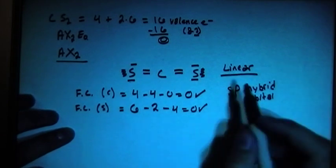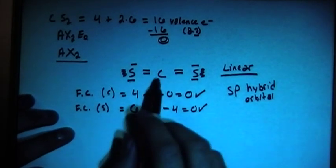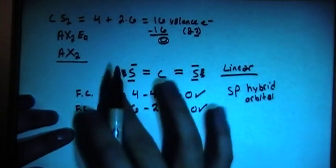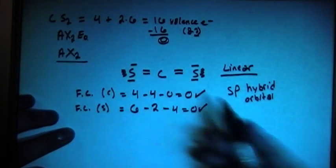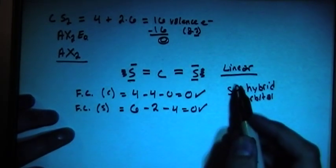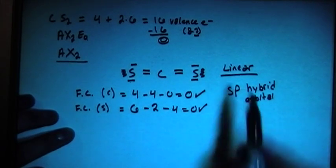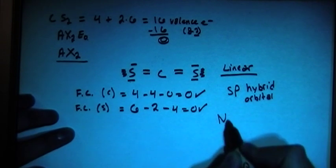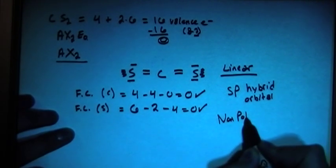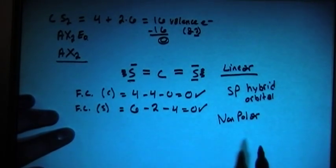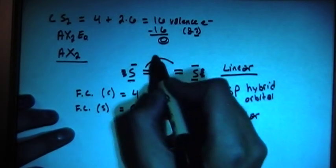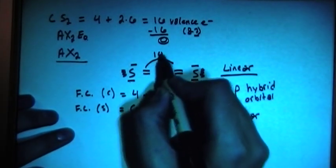And now we can check for the polarity, and in this case, it's linear, and both of the outside atoms that are attached to the center are the same. They're going to cancel each other out. They're different electronegativities, but they're equal, so they're going to cancel each other out. So this is, in fact, going to be non-polar. And the bond angle is going to be 180 degrees.